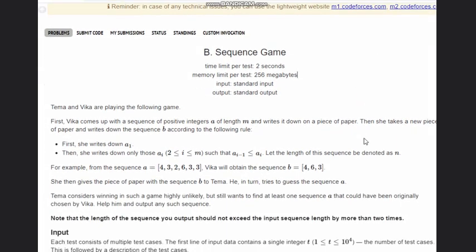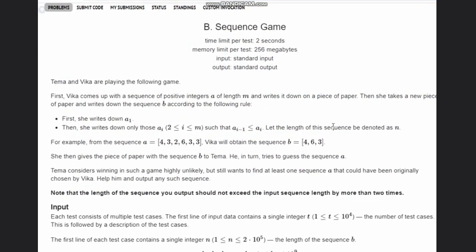In this problem, there are two friends Tema and Vika who are playing some game. First, Vika comes up with a sequence of positive integers A of length M and writes it down on a piece of paper. Basically, there are M integers.